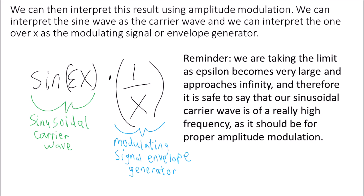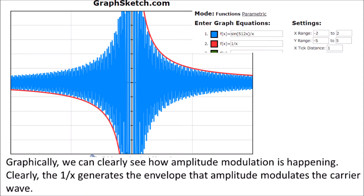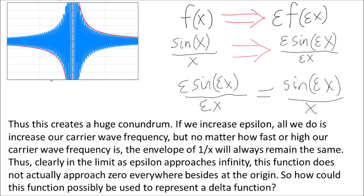We are taking the limit as epsilon becomes very large and approaches infinity, and therefore it is safe to say that our sinusoidal carrier wave is of a really high frequency, as it should be for proper amplitude modulation. Graphically, we can clearly see how amplitude modulation is happening — the 1/x generates the envelope that amplitude modulates the carrier wave. This creates a huge conundrum: if we increase epsilon, all we do is increase our carrier wave frequency, but no matter how fast or high the carrier wave frequency is, the envelope of 1/x will always remain the same. Thus clearly in the limit, this function does not actually approach 0 everywhere besides the origin.